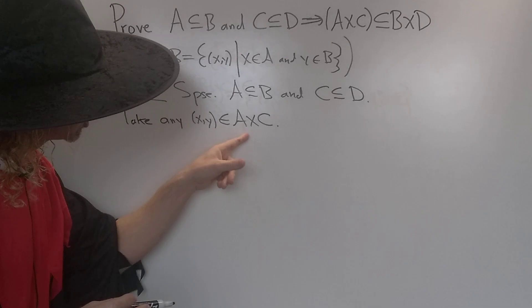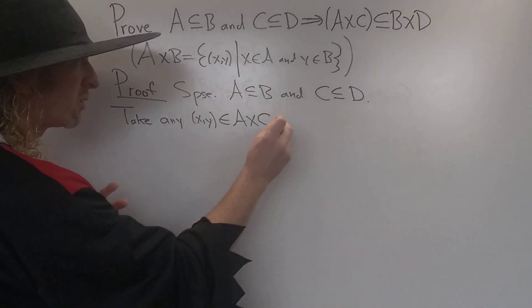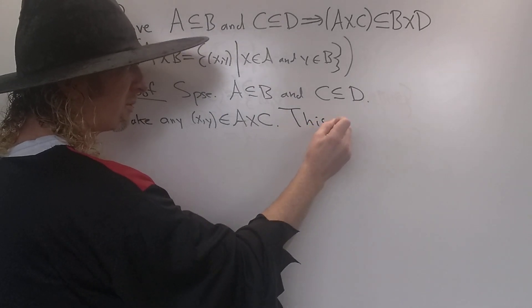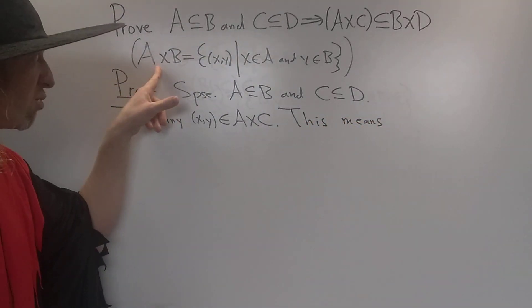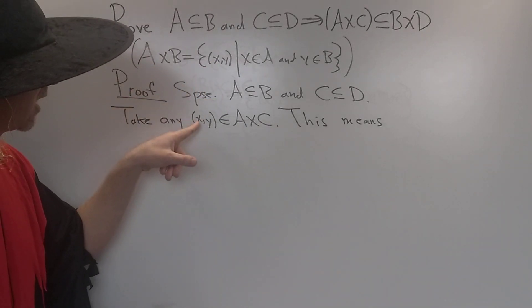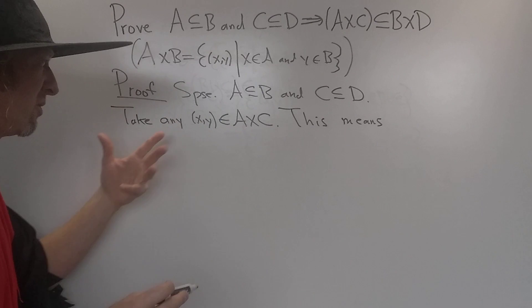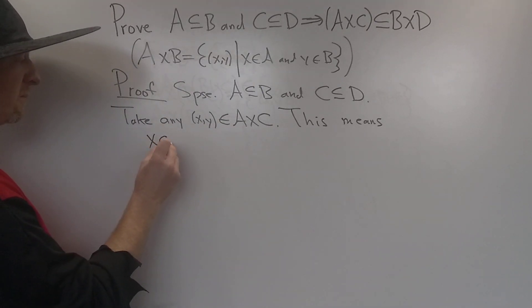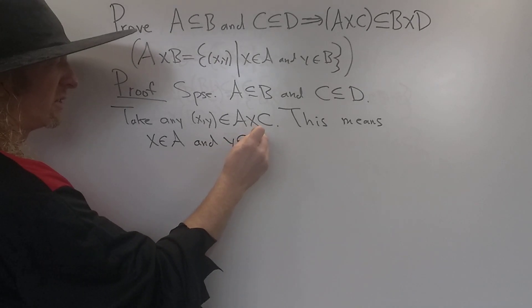Now what you do is basically write down what this means. That's all you really can do in these types of proofs. So this means, using the definition of Cartesian product, if you have an element X, Y in A cross C, that means X is in A and Y is in C. So this means that X is in A, and it also means that Y is an element of C.